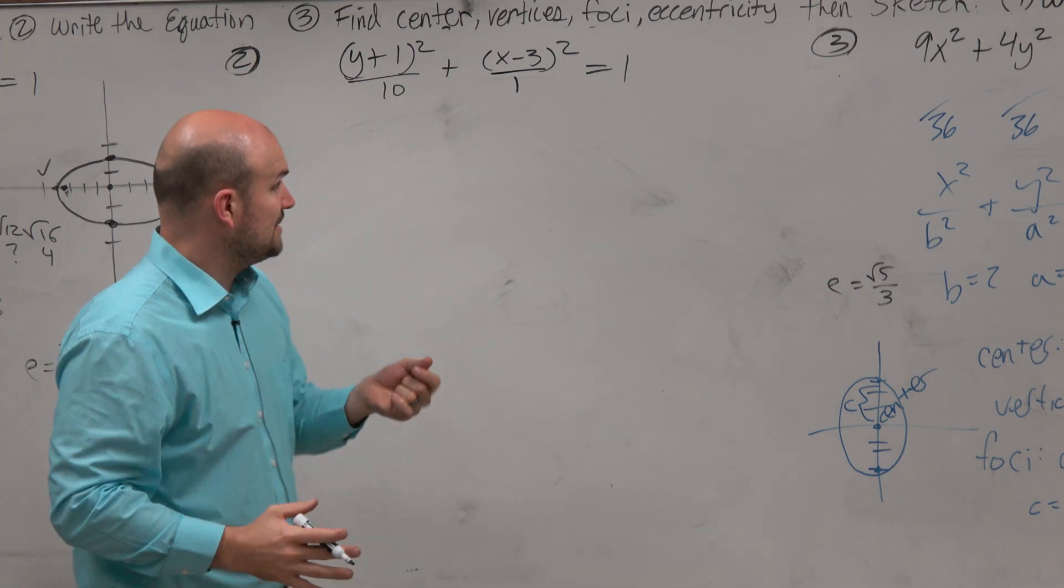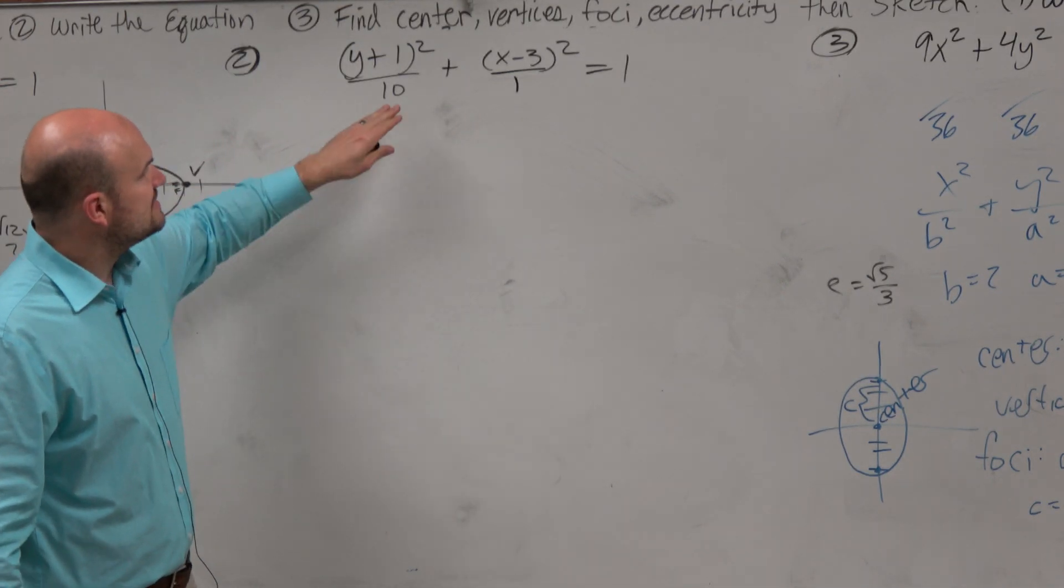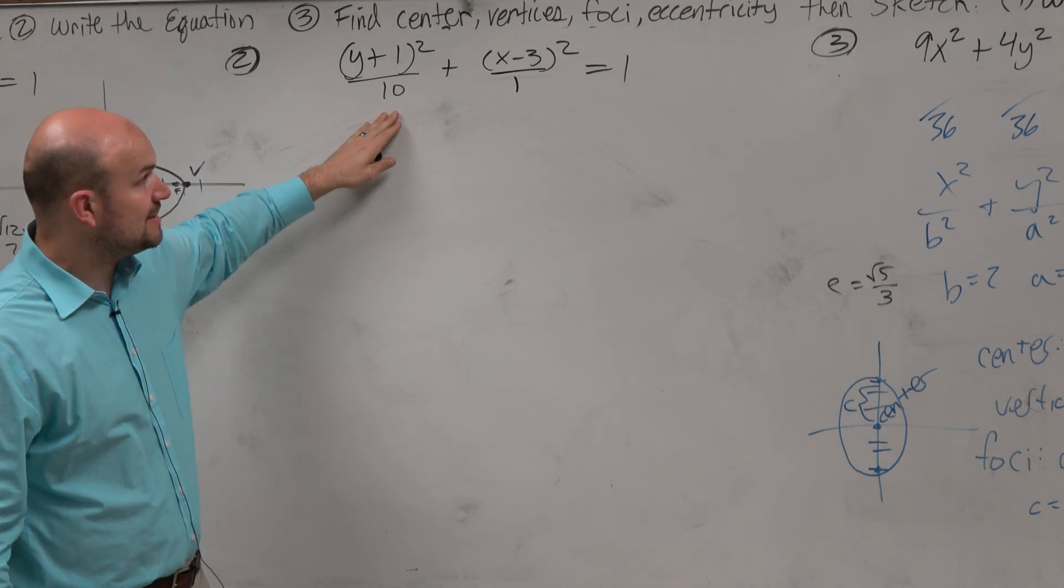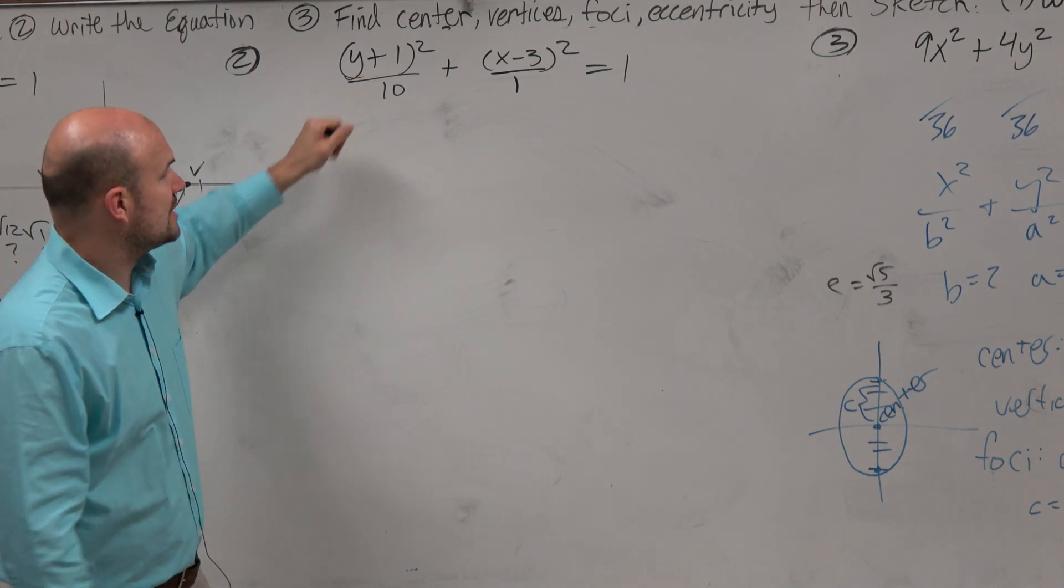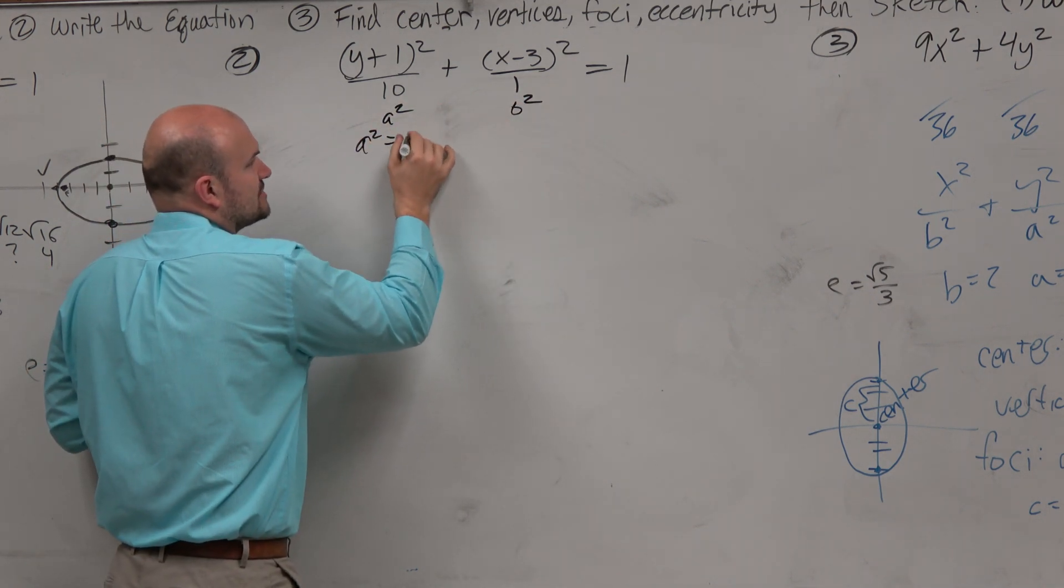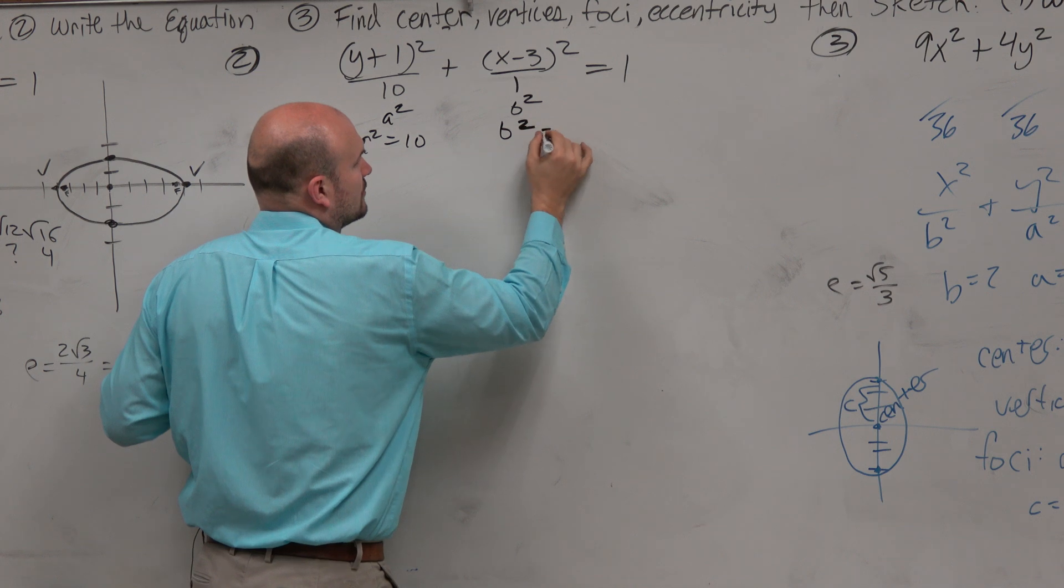So again, we're comparing, we're looking for our denominators. We see that 10 is going to represent our a squared because a squared is always larger than b squared for an ellipse. So this is your a squared, that's your b squared. So you could say a squared equals 10, b squared equals 1.